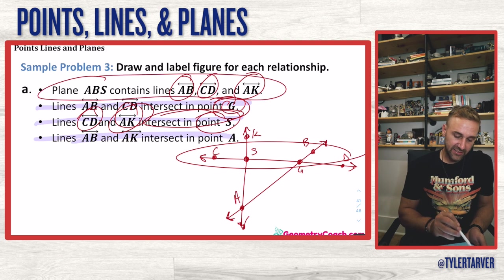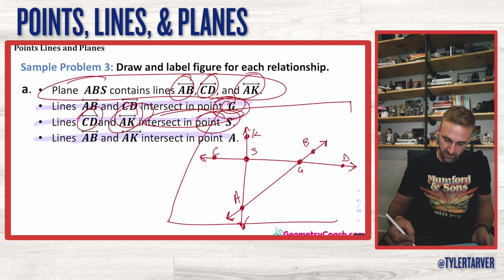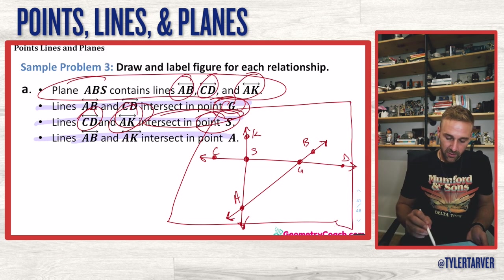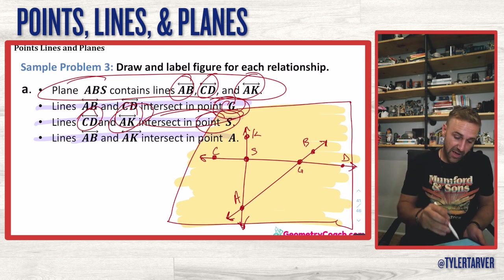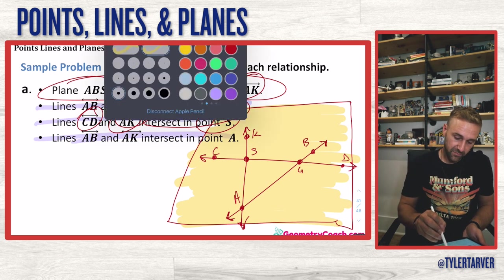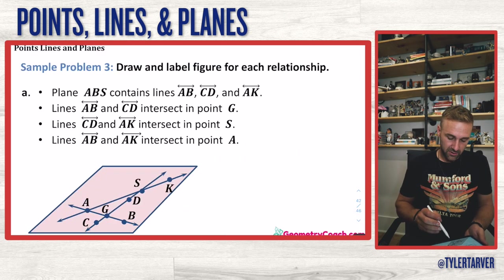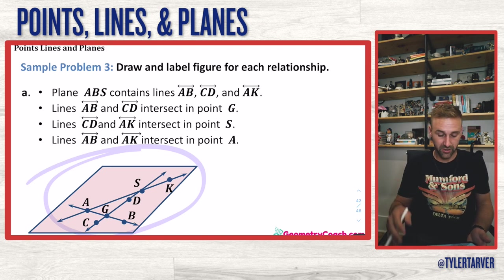Now we just need to draw a plane that contains all three of those lines — it looks like a piece of paper containing all of them. It's a little messy but I think we hit all our criteria. Making the plane yellow, we've got all three lines inside it and we've met all of our criteria. Looks pretty good.